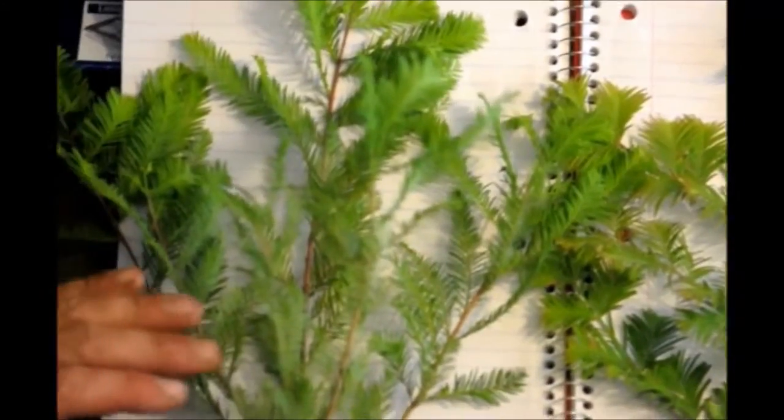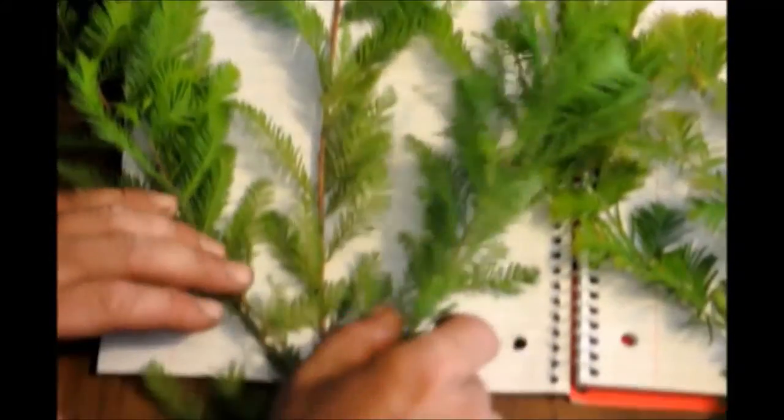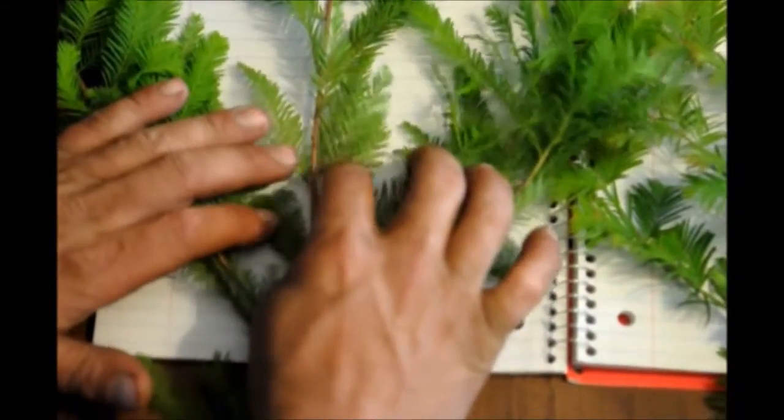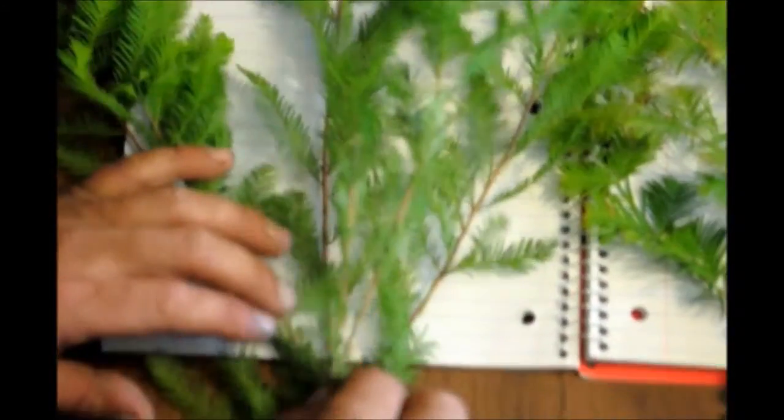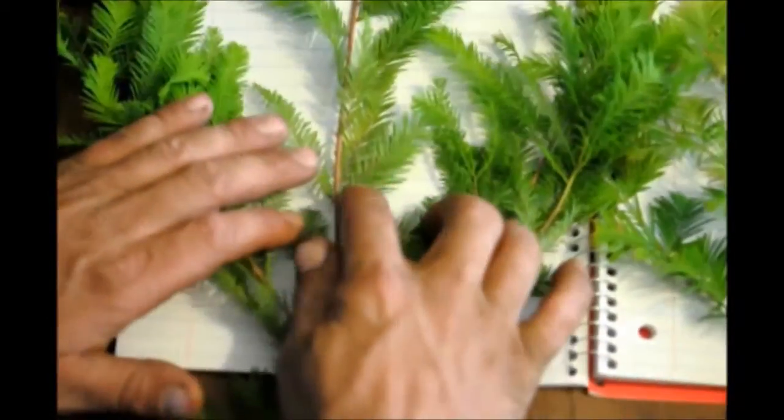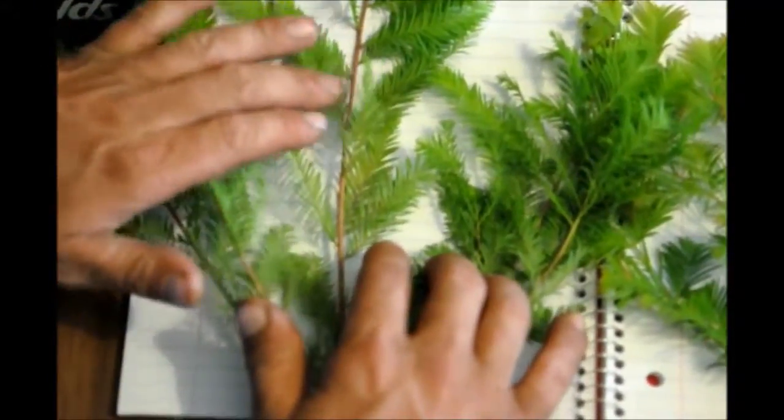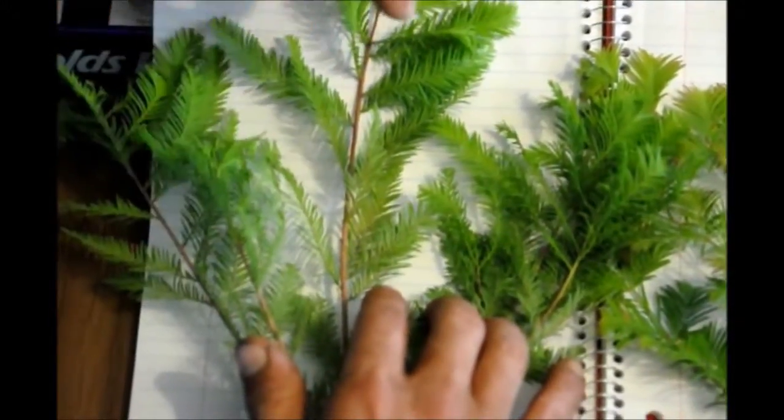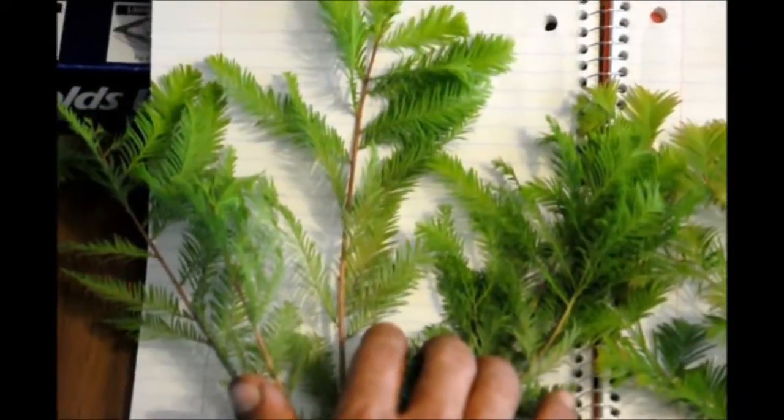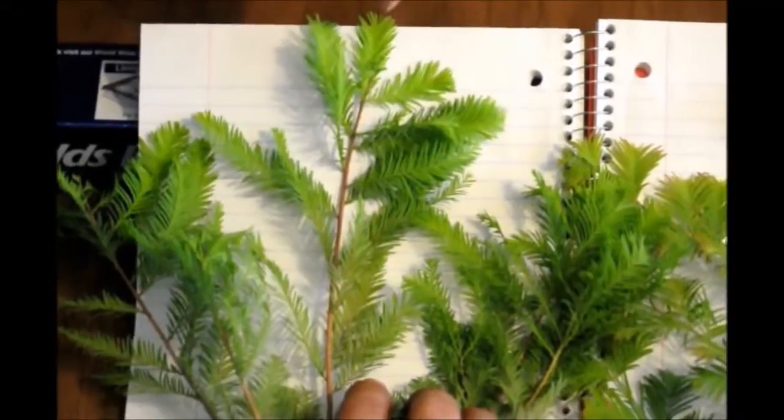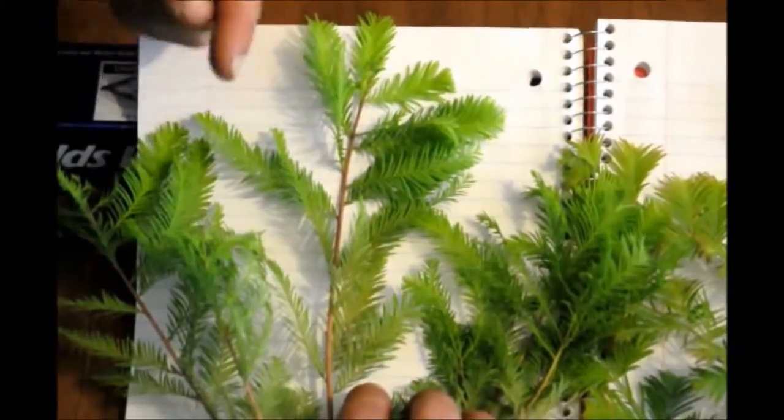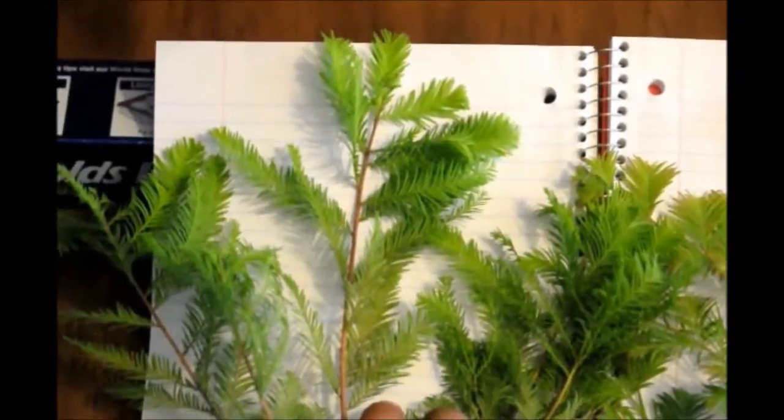Bald Cypress is alternate. So when you take a look at the foliage and the leaves and the branches, the branches and the leaves always alternate from one another. So there is a leaf here. Directly on the opposite side there is no leaf, but up a little bit there is another leaf. So they alternate as they go up the branch.